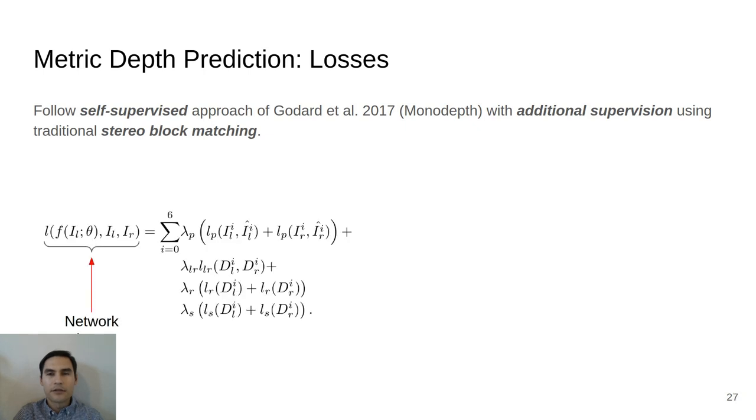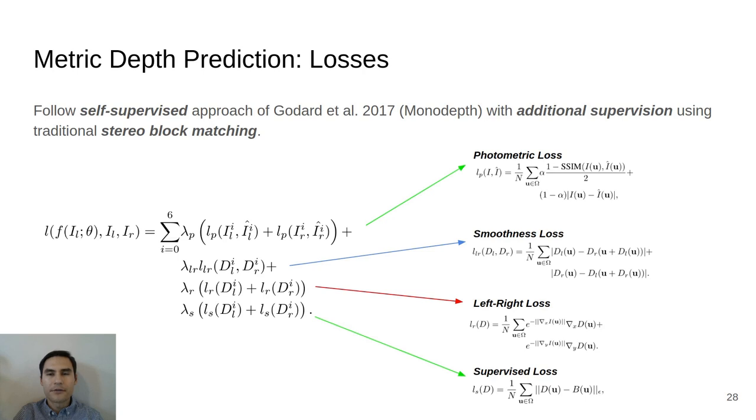The total loss of the network is composed of four weighted terms. A photometric loss that captures the consistency between the input images and those predicted by our estimated disparities. A smoothness loss that penalizes high-frequency noise in the disparities. A left-right loss that ensures the disparities from the left image and the right image are consistent with each other. And a supervised loss term that ensures that the coarse predicted disparities are consistent with high-resolution disparities computed by stereo block matching.